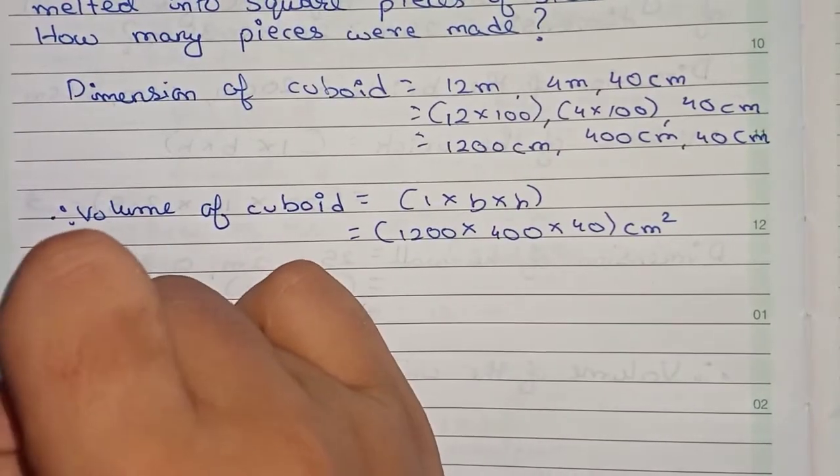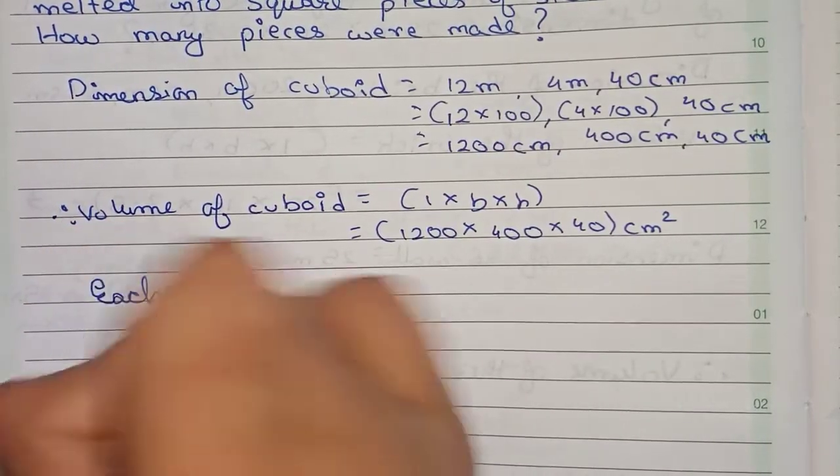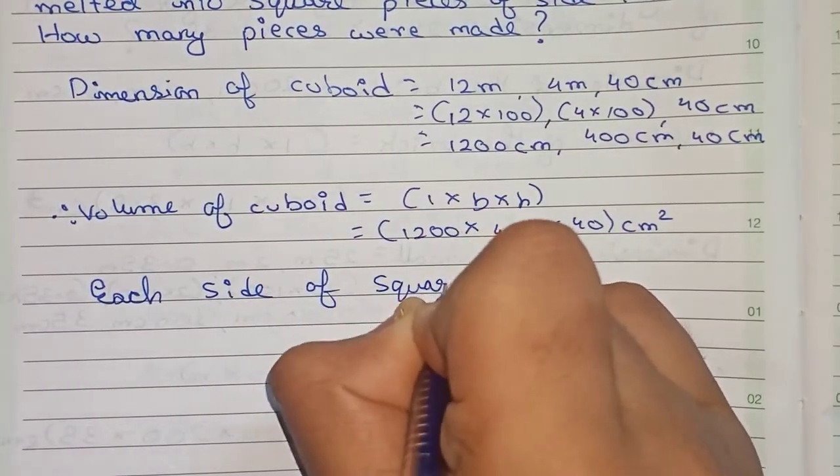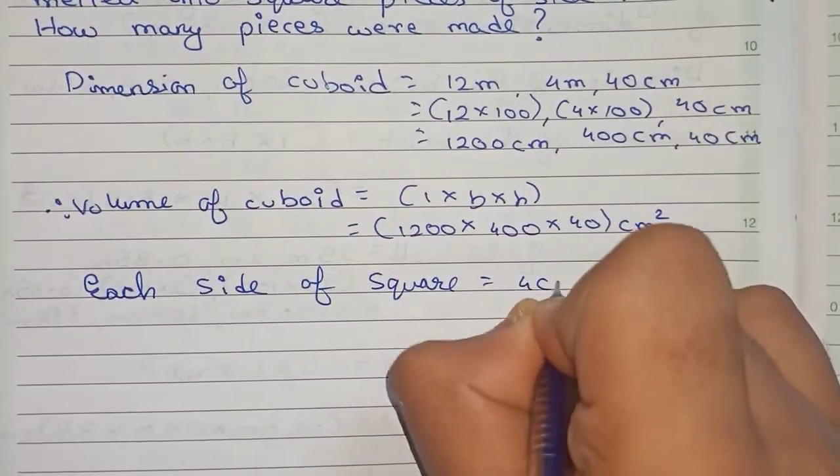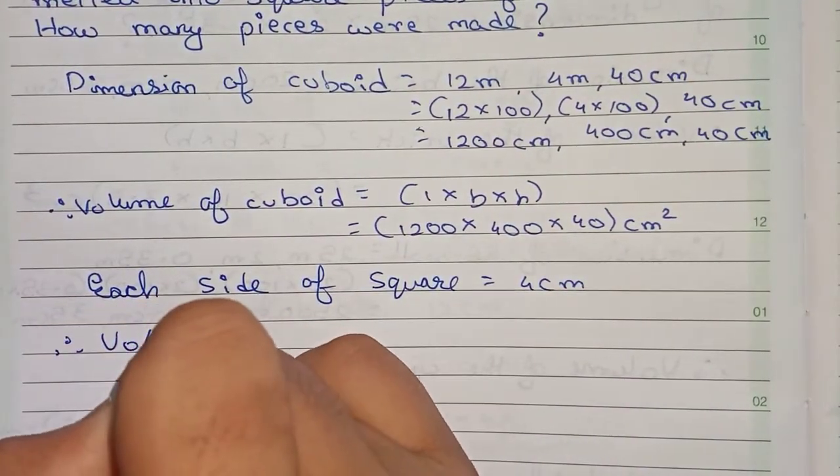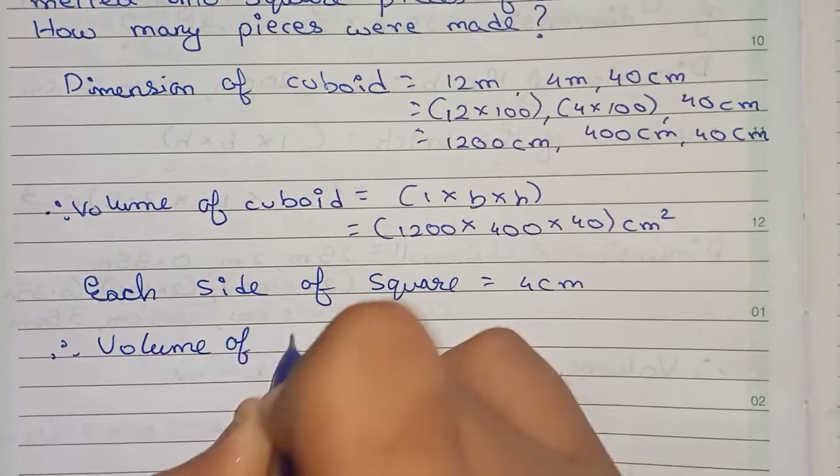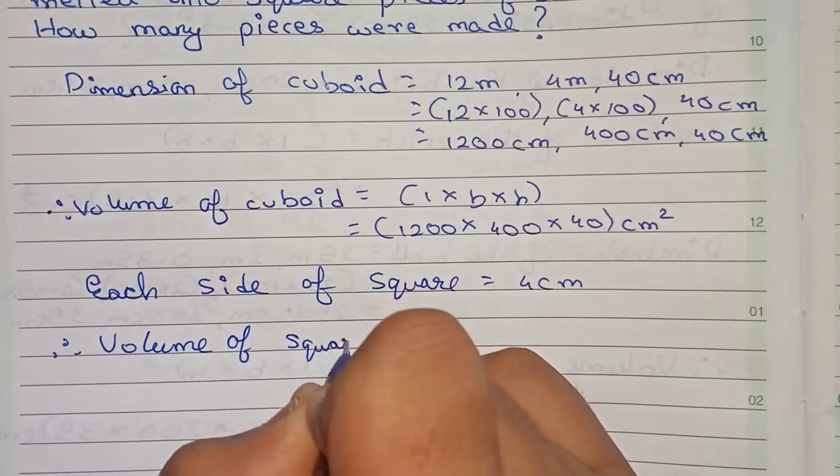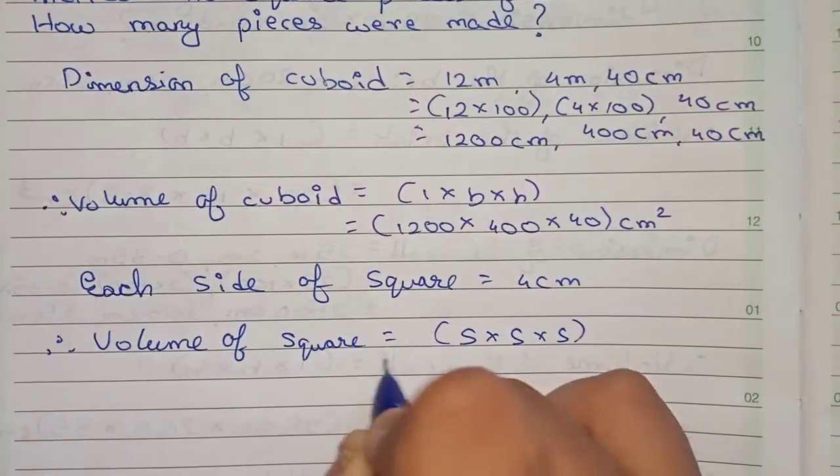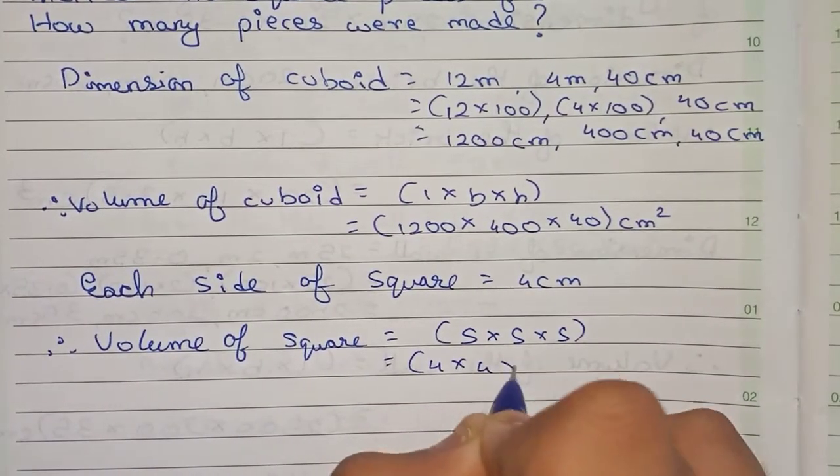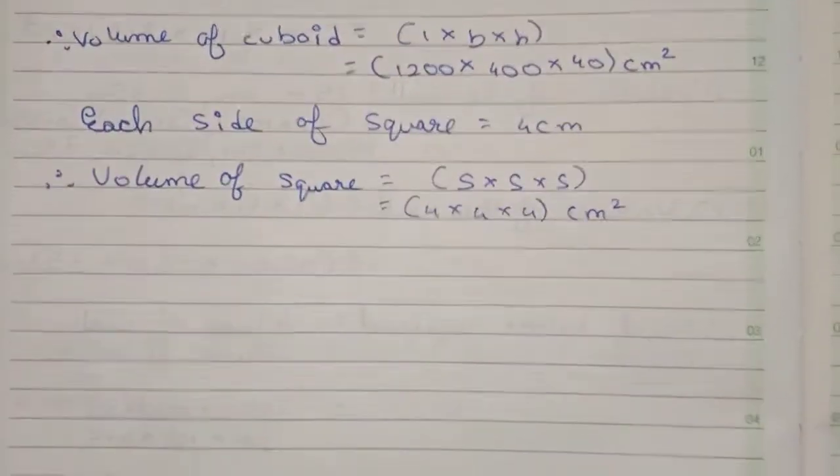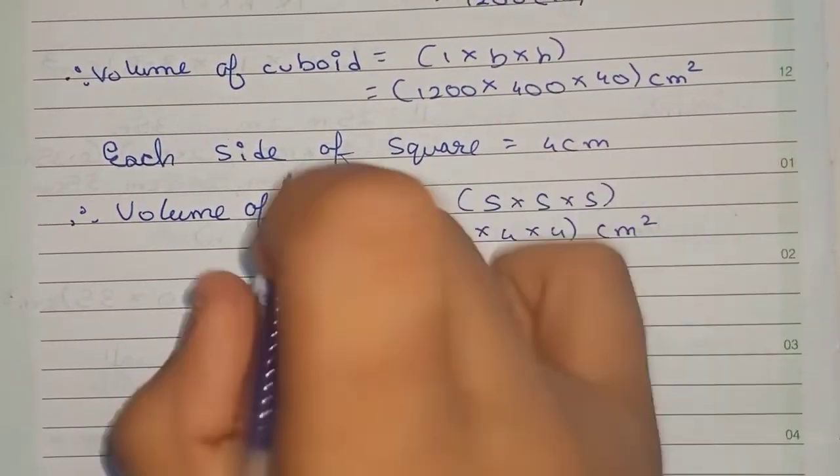So we write that each side of square, it is equal to 4 centimeter as given. So therefore volume equals to side into side into side, which is 4 into 4 into 4 centimeter cube.